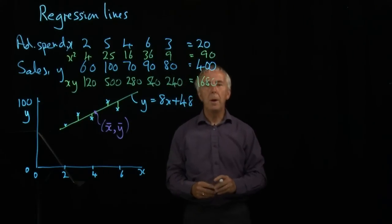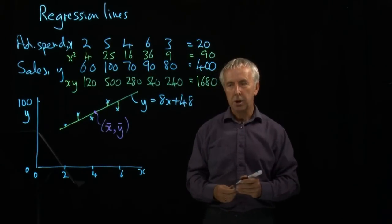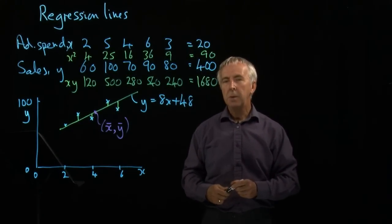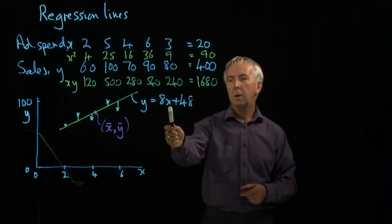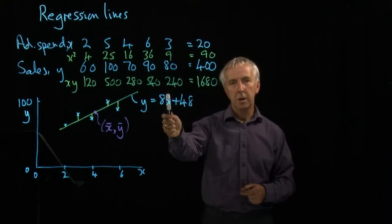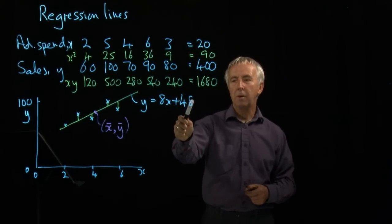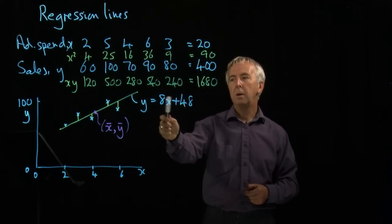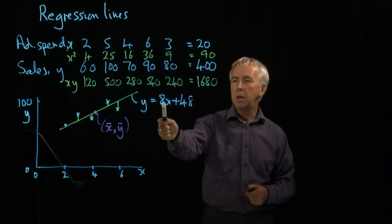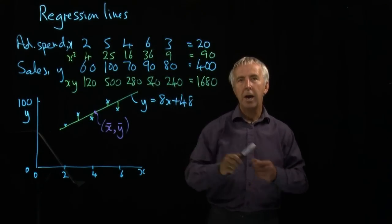So let's first of all think about what these numbers mean. 8 is the gradient, and that means that every time you increase x by 1, y increases by 8. If x was 10, I'd get 80 plus 48. If x then becomes 11, I get 88 plus 48. So this gradient is telling us how much y increases for each x.